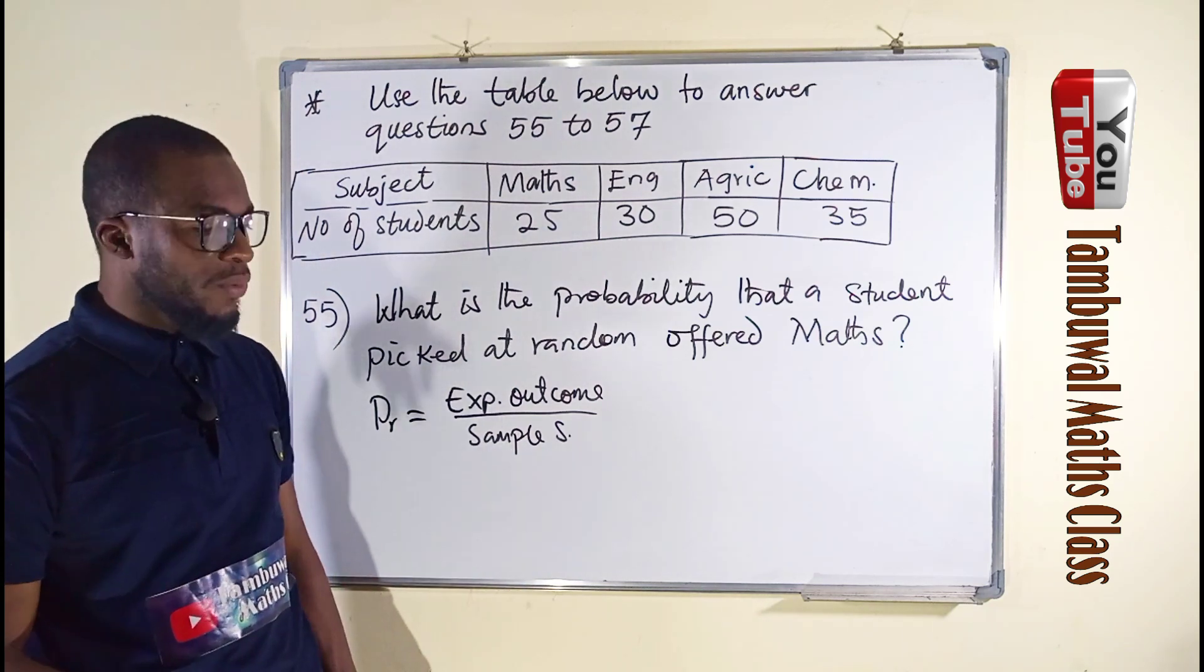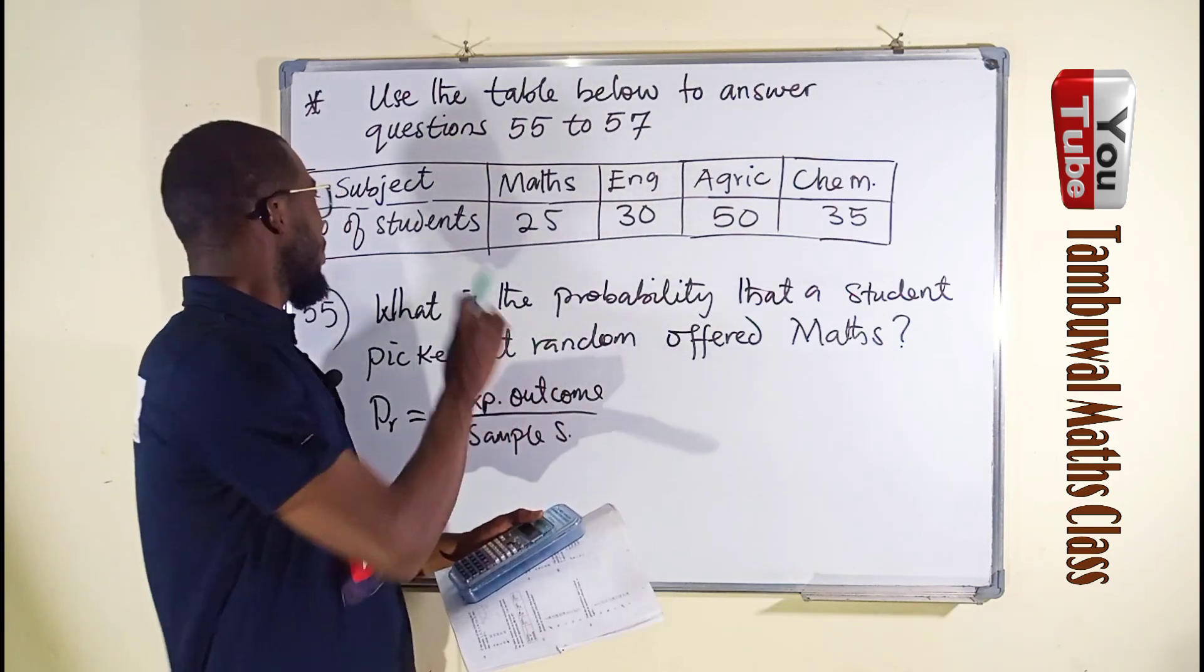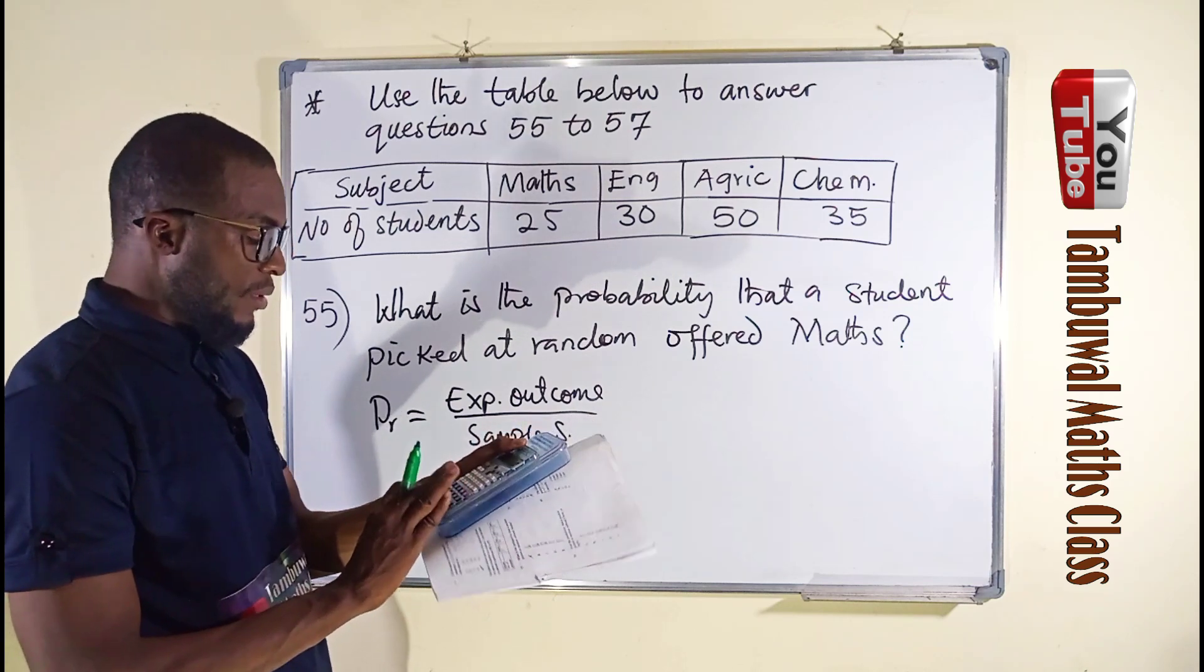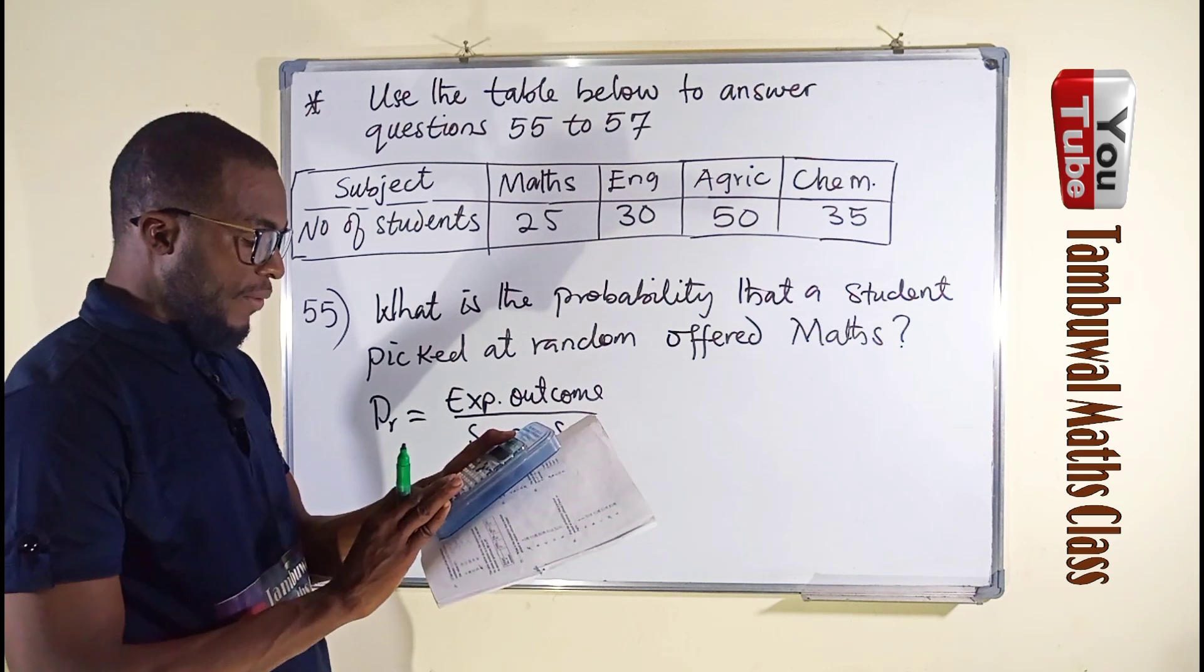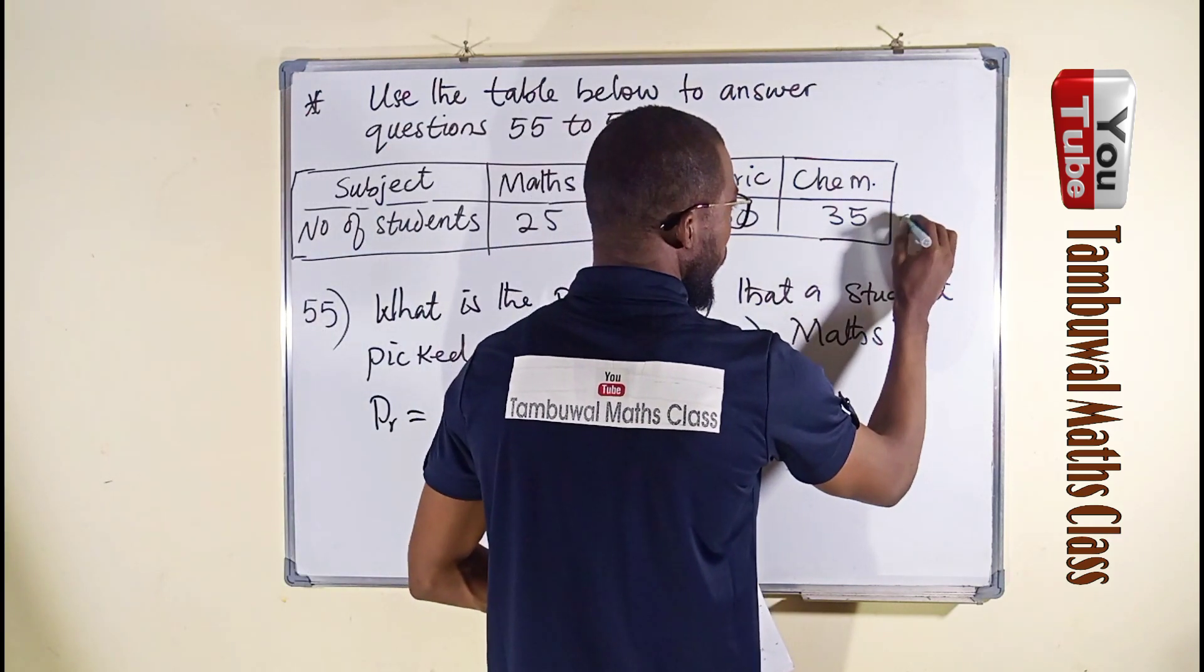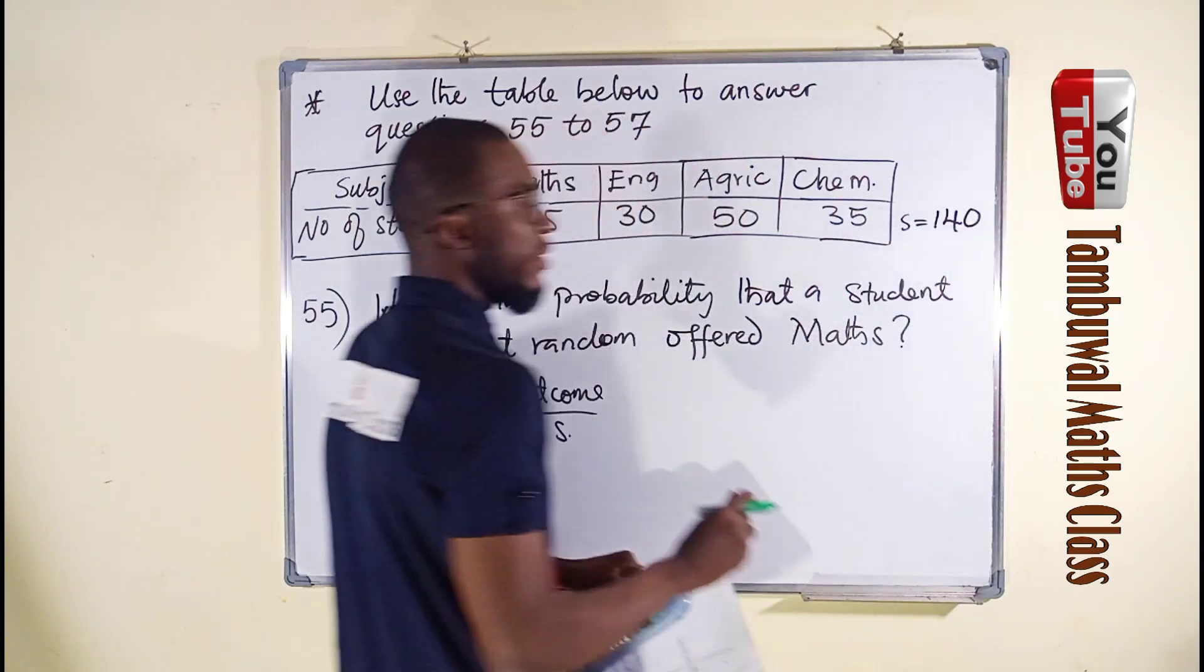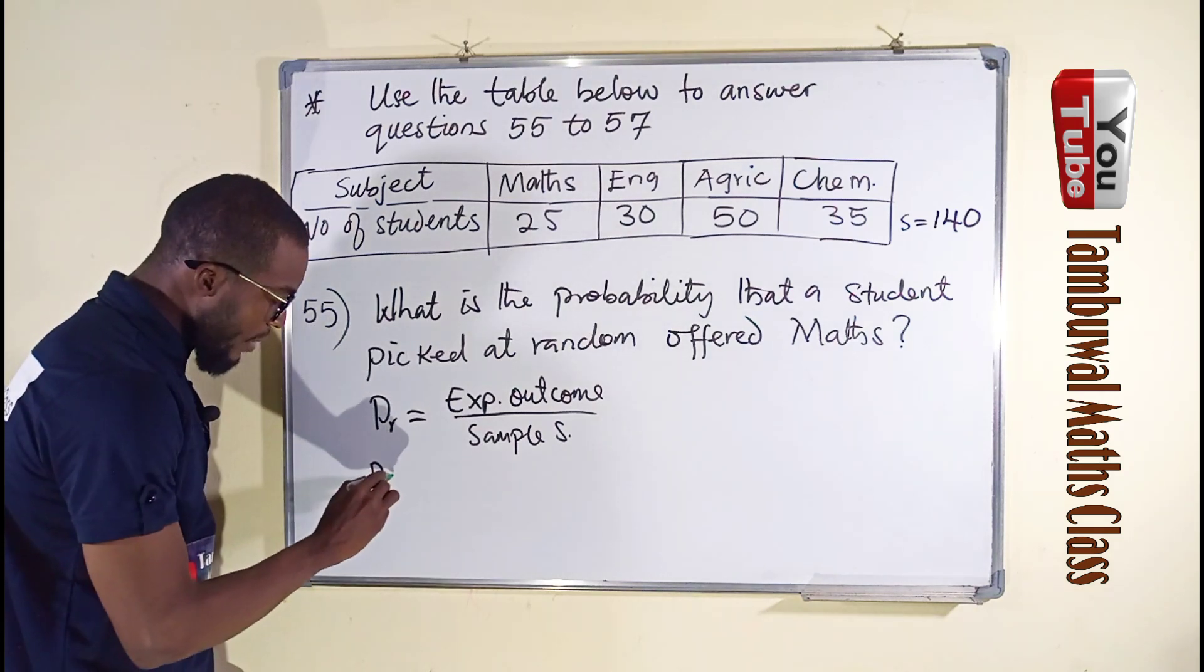The sample space is the total number of all the students. We have 25 plus 30 plus 50 plus 35. Collectively, the sum equals 140 students.